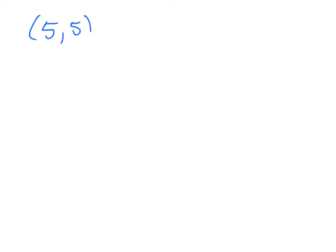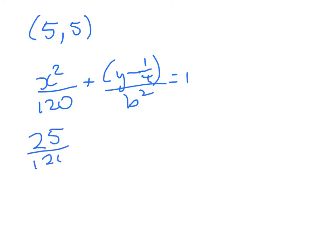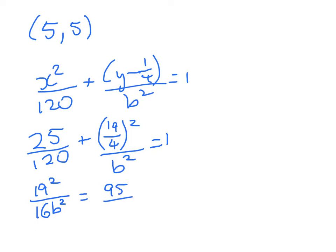So 5, 5 is on the equation. We get x squared on 120 plus y minus 1 quarter on b squared equals 1. So that gives me 25 on 120 plus... Now, 5 minus 1 quarter, I'm going to write this as a fraction, is 19 quarters. So that's 20 minus 1. And that's got to be squared divided by b squared equals 1. So simplifying this a little bit, what do we get? Well, we get 19 squared over 16b squared is equal to 95 over 120.